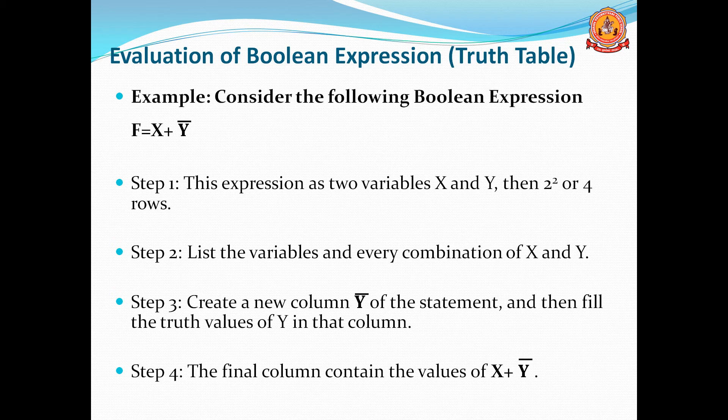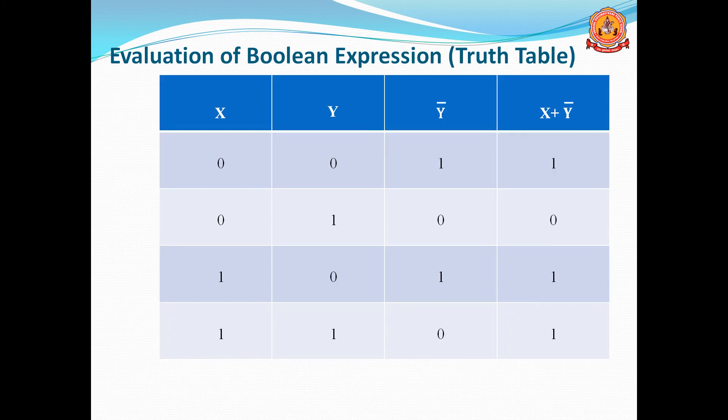Then create a new column for the new statement. Since x and y inputs are listed, next we create a new column for y'. Y' is the new variable here. For that we fill the truth values of y' based on the NOT of y. Based on y, we write y'. Then the final column contains the values of x + y'.